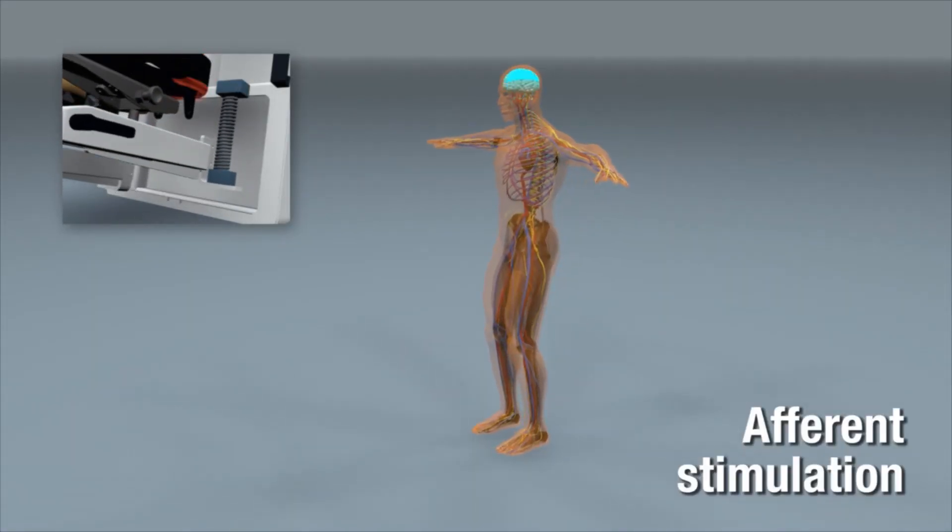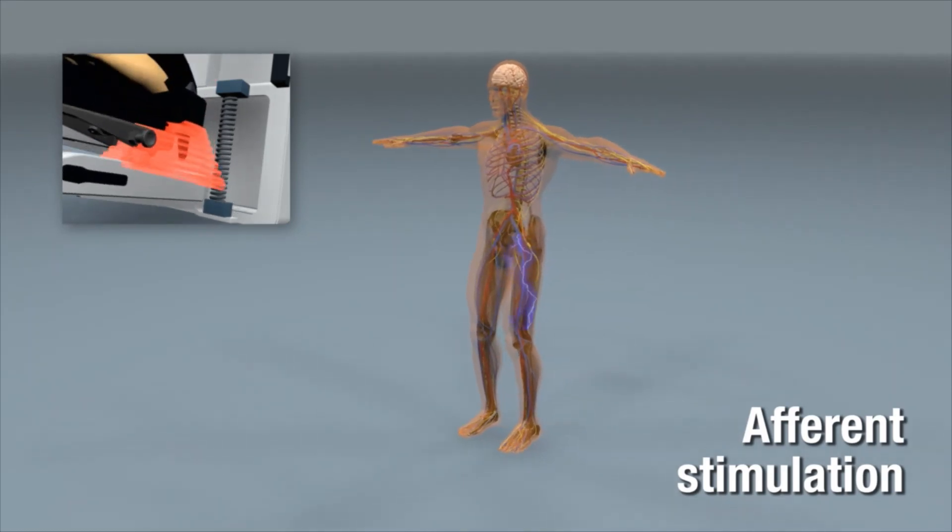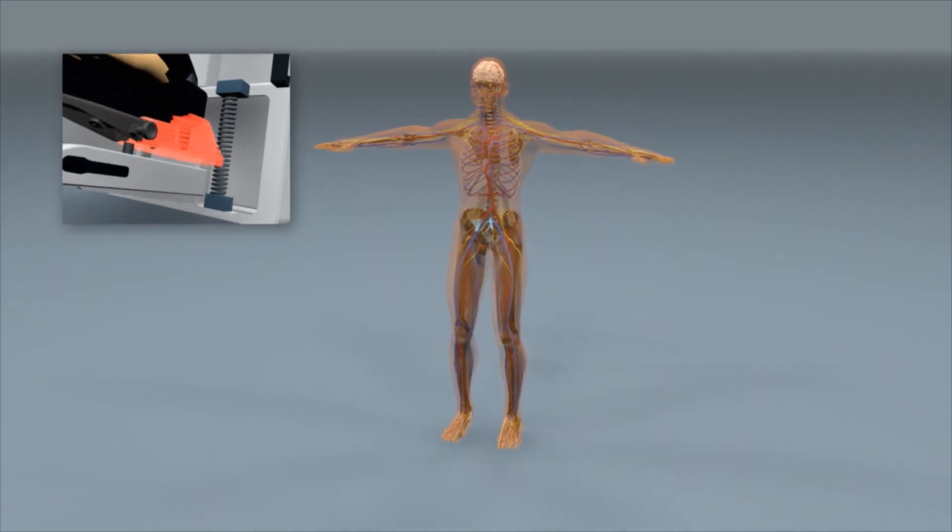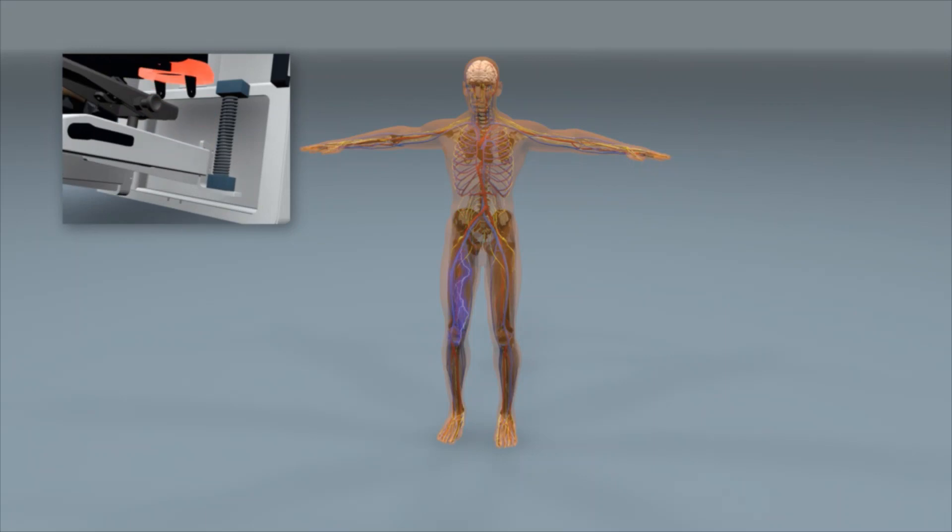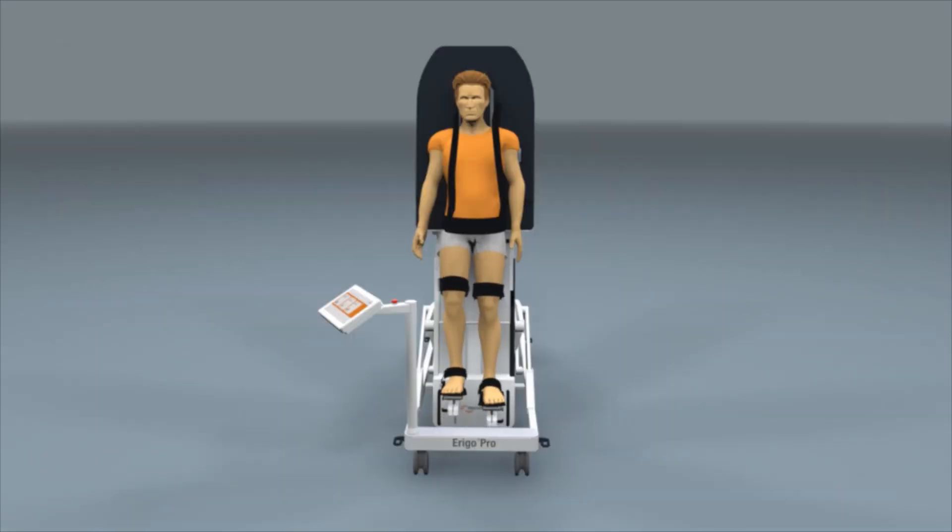This unique afferent stimulation provided by the ERIGO activates the central nervous system of the patient, which in turn stimulates the muscles of the lower extremities.